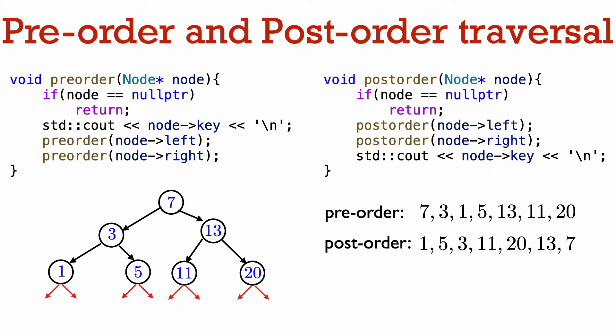Just by changing the relative order of processing a node and the recursive calls to its left and right subtrees, we arrive at two other methods to traverse a tree: pre-order traversal and post-order traversal. In pre-order traversal, we first process a node before recursively visiting its left subtree and then its right subtree. In post-order traversal, we wait until after both recursive calls on the left and right subtree before processing a node. In this example tree, I've given the order in which we would print out the nodes when doing a pre-order and post-order traversal — I'll let you think about why that's the correct ordering. Both pre- and post-order traversals have interesting applications in the context of binary search trees and trees more generally.